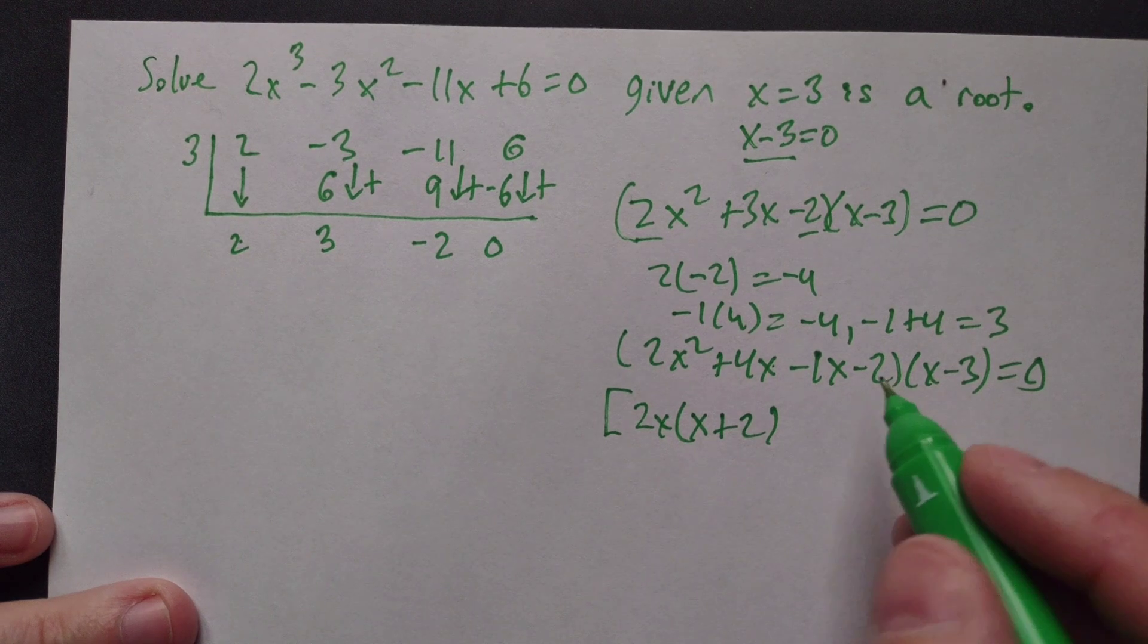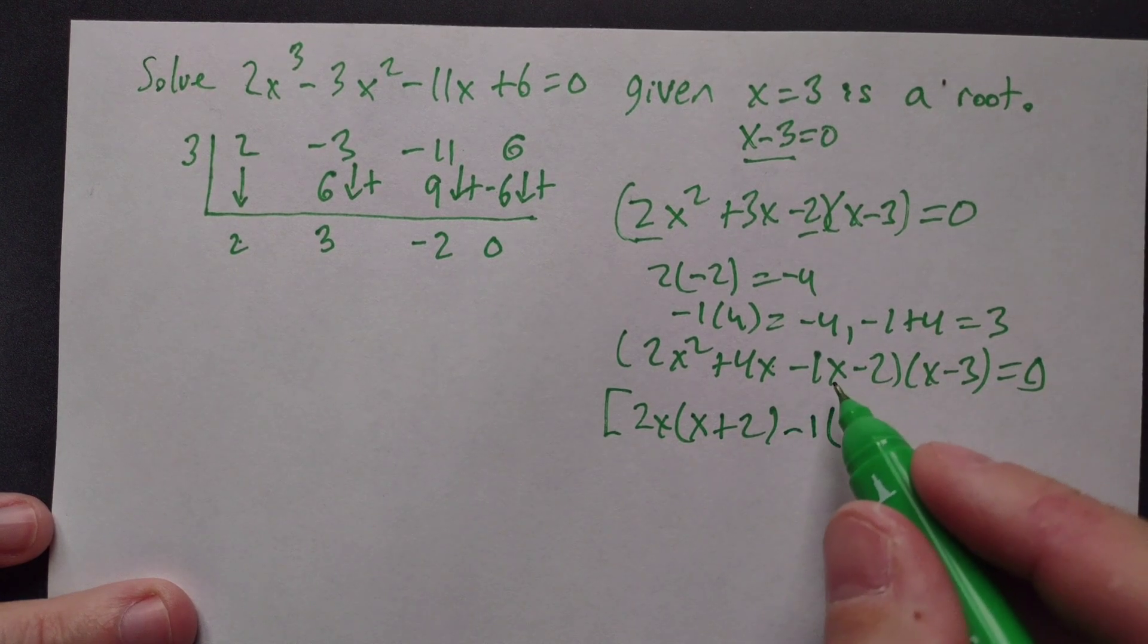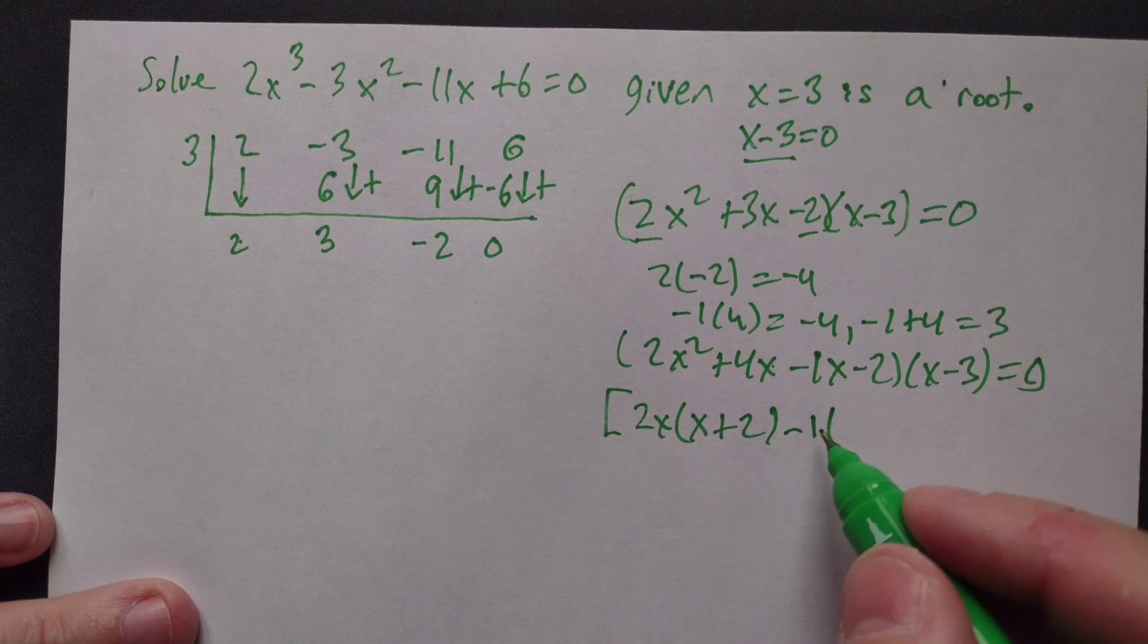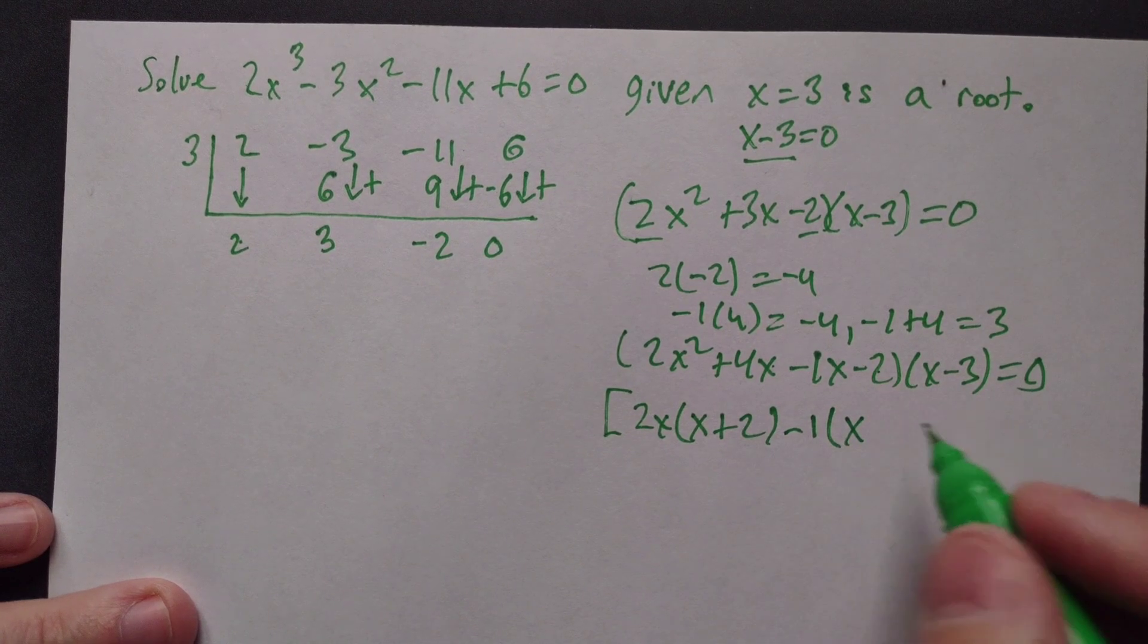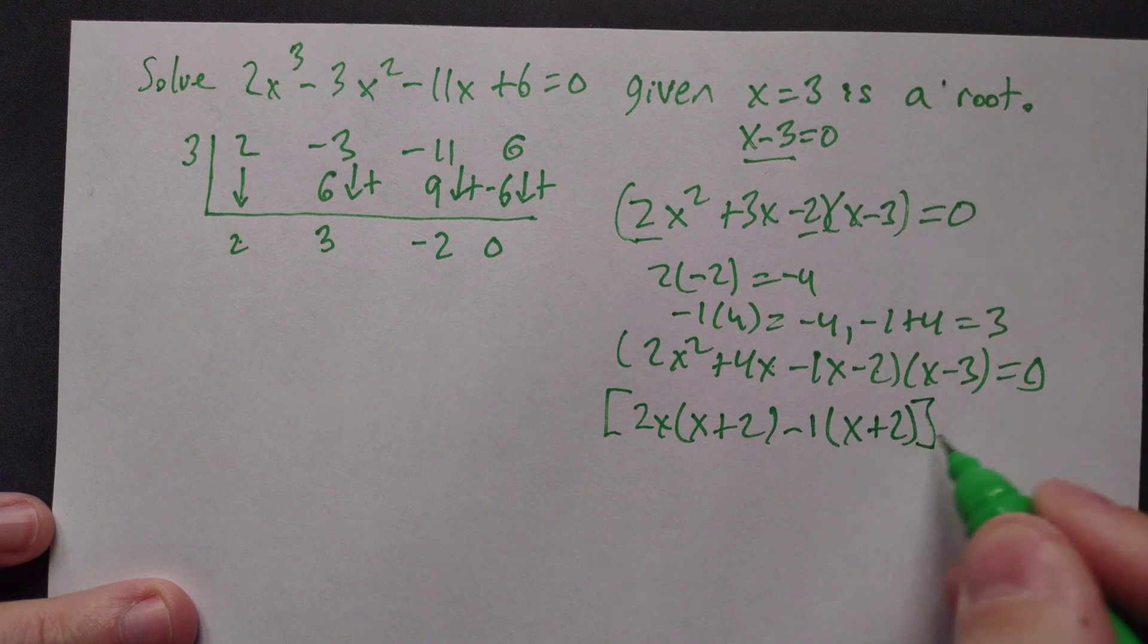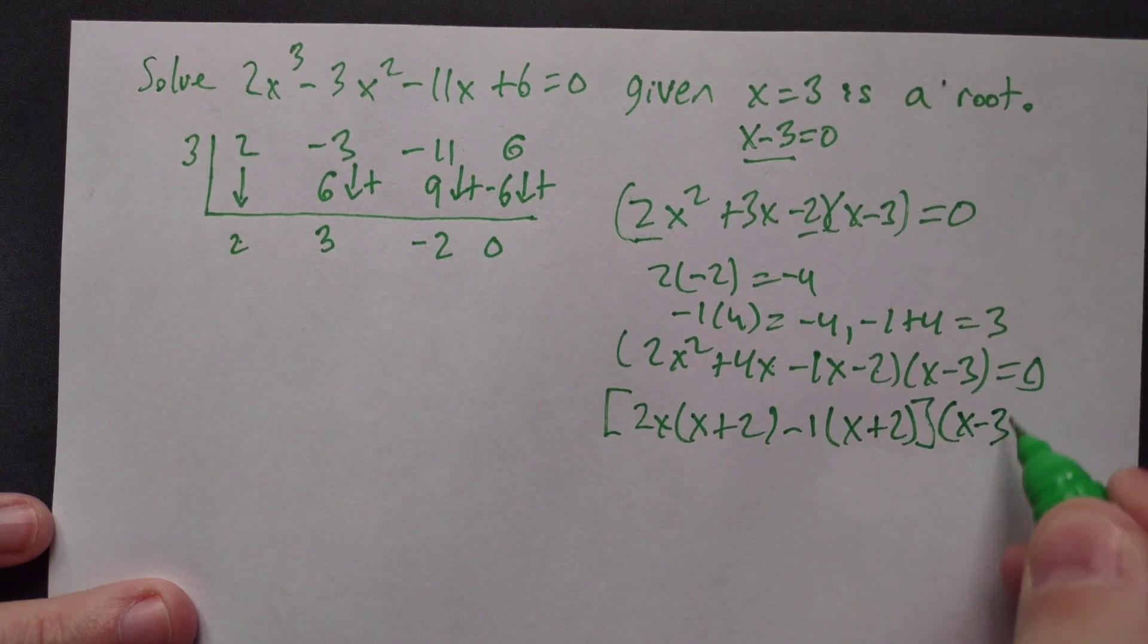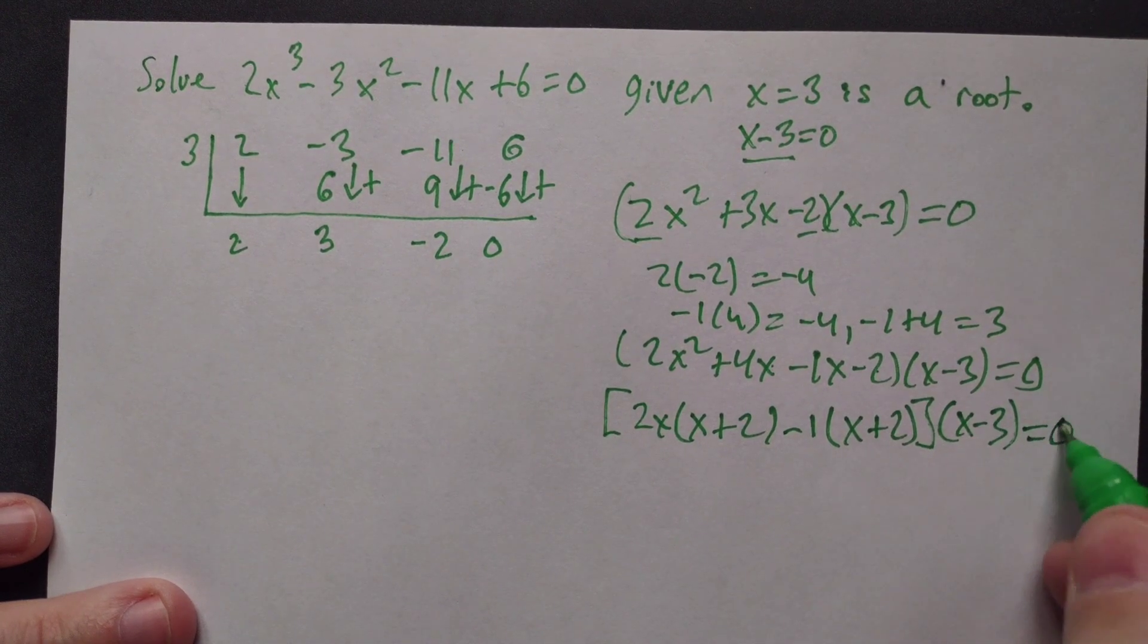From -1x - 2, factor out -1. -x ÷ (-1) = x, and -2 ÷ (-1) = 2, giving -1(x + 2). Keep the x - 3 factor and set equal to 0.